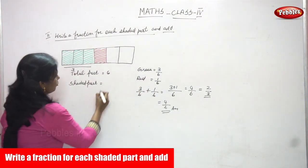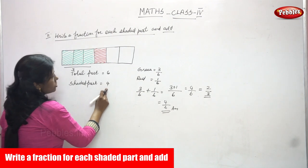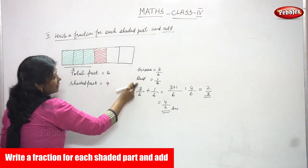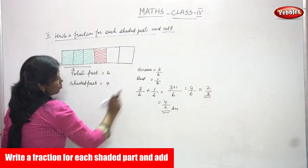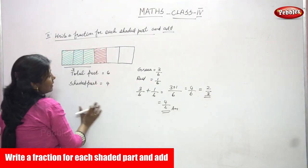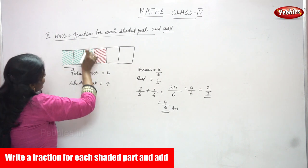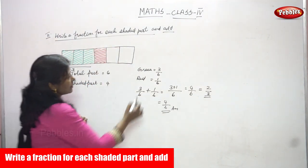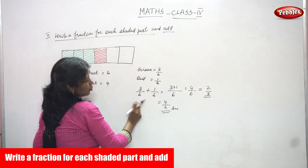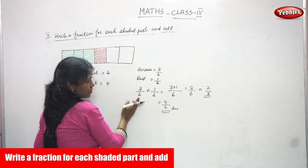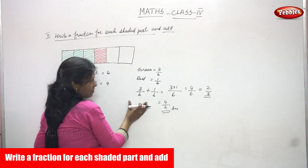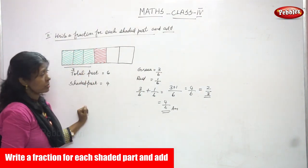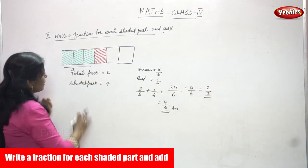The shaded part is four — green color three and red color one, so we write three by six and one by six. We have to write fractions and do the addition. This is a like fraction addition: three by six plus one by six, because both fractions have the same denominator.